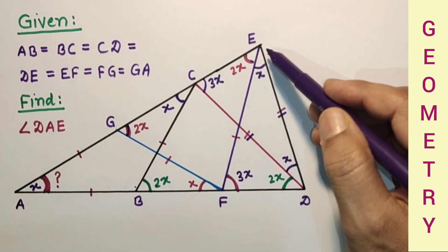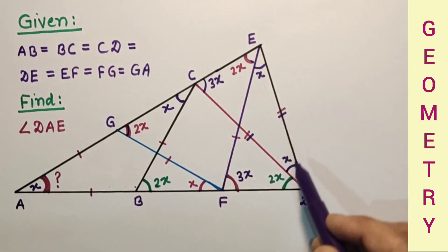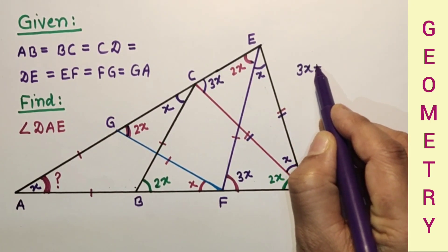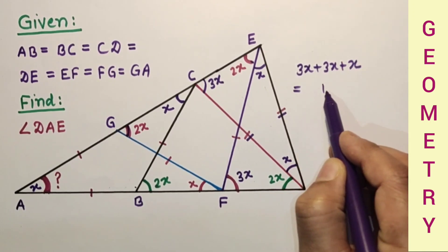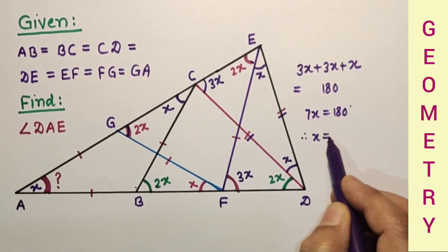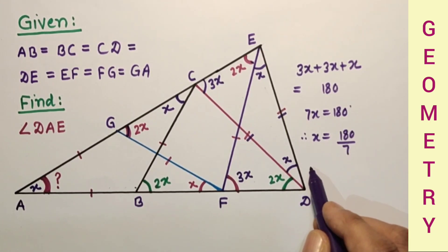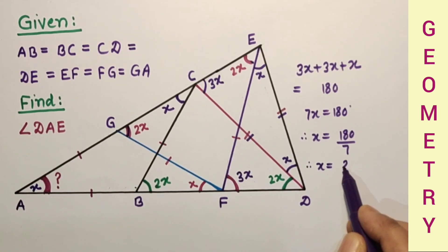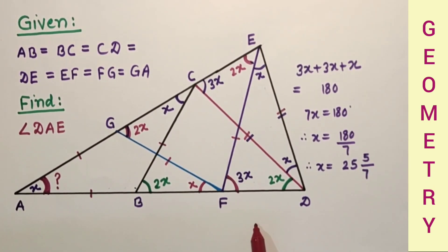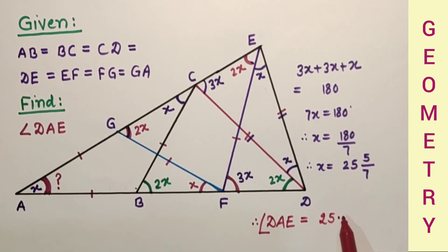Now consider this triangle — add all three angles to get 180. Considering this triangle: 3X plus 3X plus X equals 180. That gives 7X equals 180. Therefore X equals 180 divided by 7, which gives the value of angle DAE equal to approximately 25.71 degrees — up to two decimal places. This is the answer.